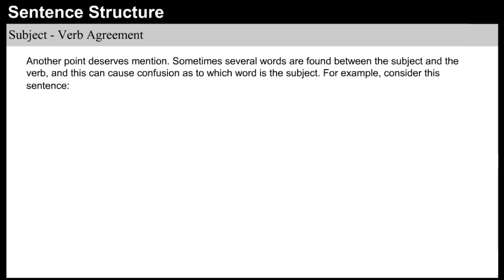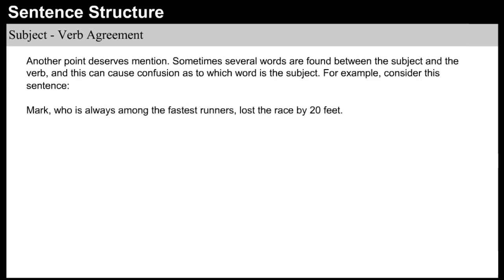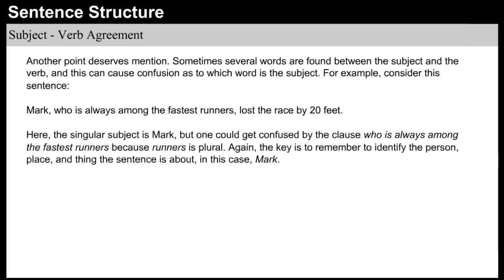Sometimes several words are found between the subject and the verb, and this can cause confusion as to which word is the subject. For example, consider this sentence: 'Mark, who is always among the fastest runners, lost the race by 20 feet.' Here, the singular subject is Mark. But one could get confused by the clause 'who is always among the fastest runners,' because runners is plural. Again, the key is to remember to identify the person, place, and thing the sentence is about — in this case, Mark.